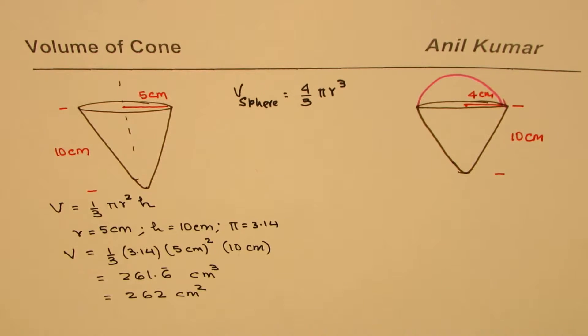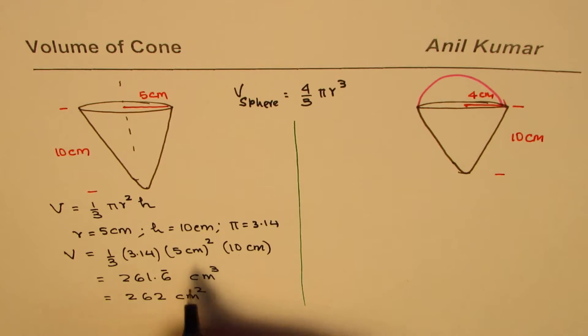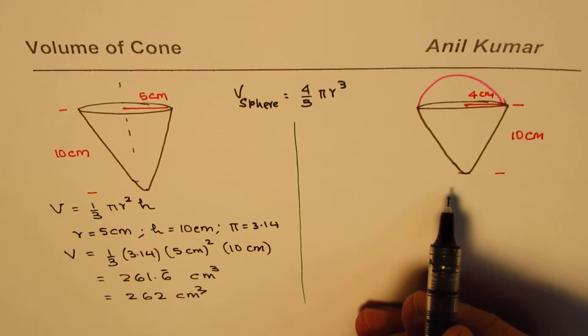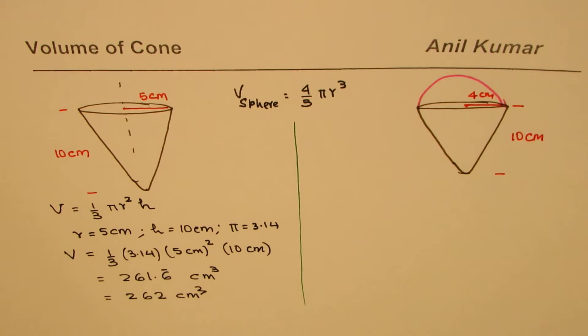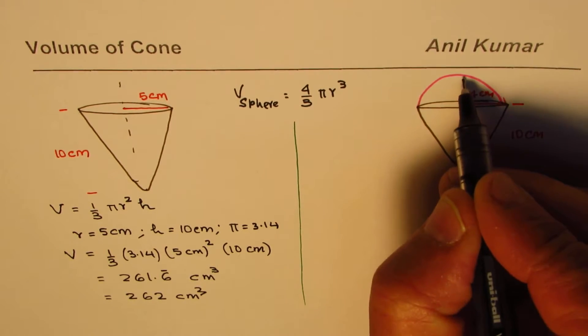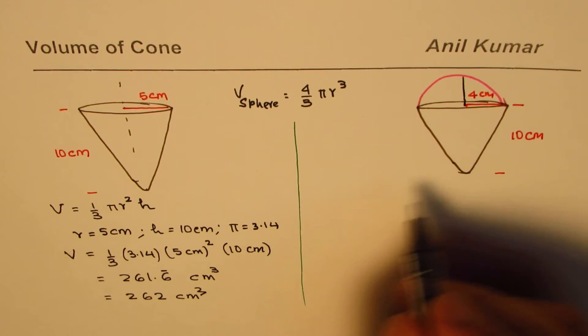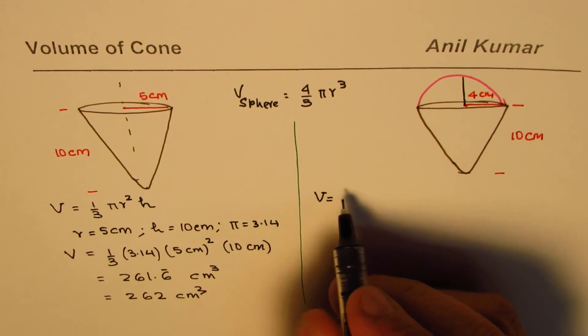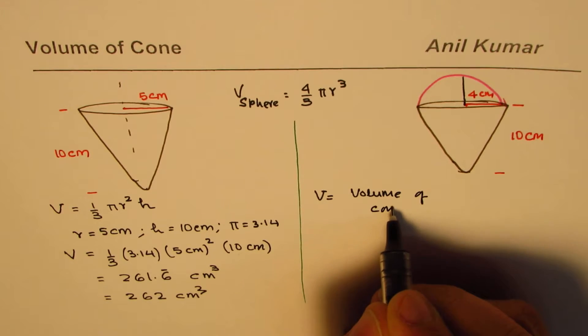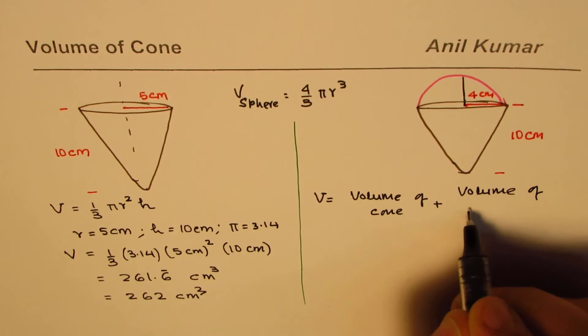Remember we have to take care of the units. It is centimeter cube. Let's do the next one. In this particular case we are looking at two things: first is the volume of the cone and second is volume of the hemisphere, half sphere. So we can write this volume equals volume of the cone plus volume of hemisphere.